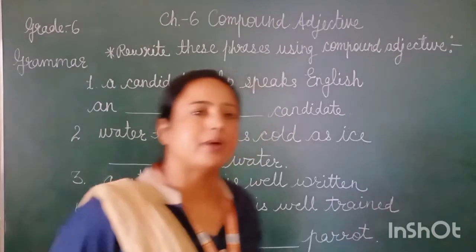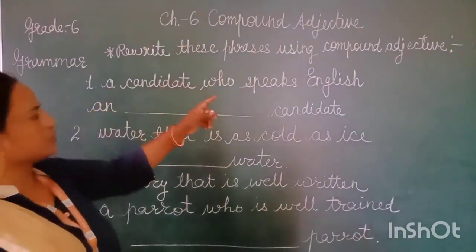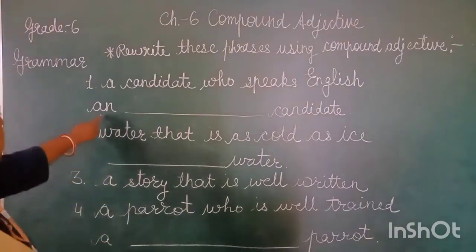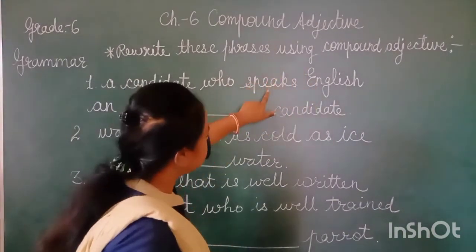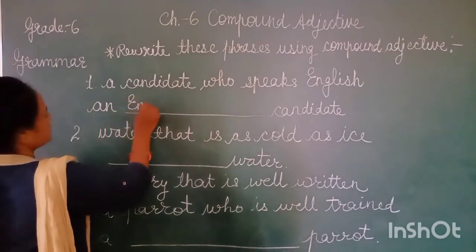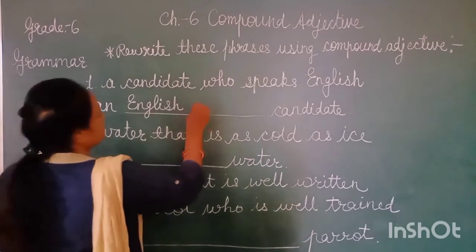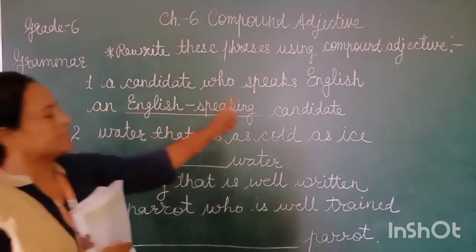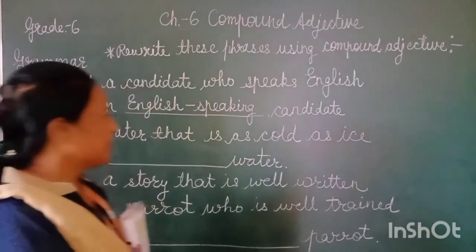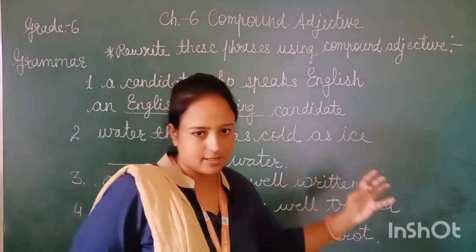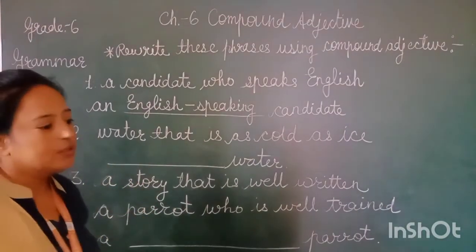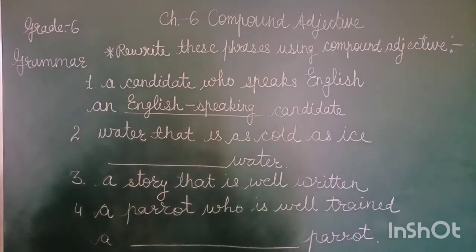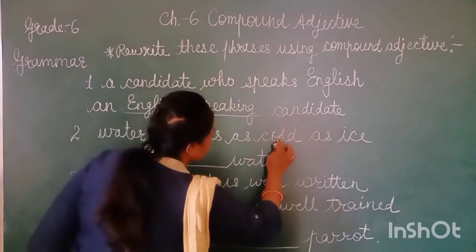Let's see some more examples of compound adjectives. First: 'A candidate who speaks English' — instead of this phrase, we can use the compound adjective form: 'an English-speaking candidate.' Second: 'Water that is as cold as ice' — instead of this phrase, we can use the compound adjective form: 'ice-cold water.'